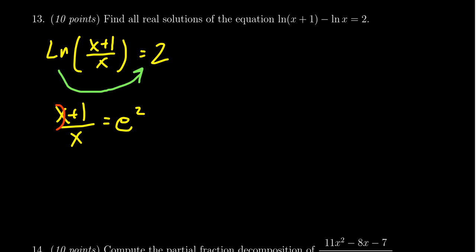Now we have to solve for x. There's an x in the numerator and x in the denominator. So I'm going to clear the denominators by multiplying both sides by x. The x's on the left cancel, leaving x plus 1. And on the right-hand side, we get e squared x.